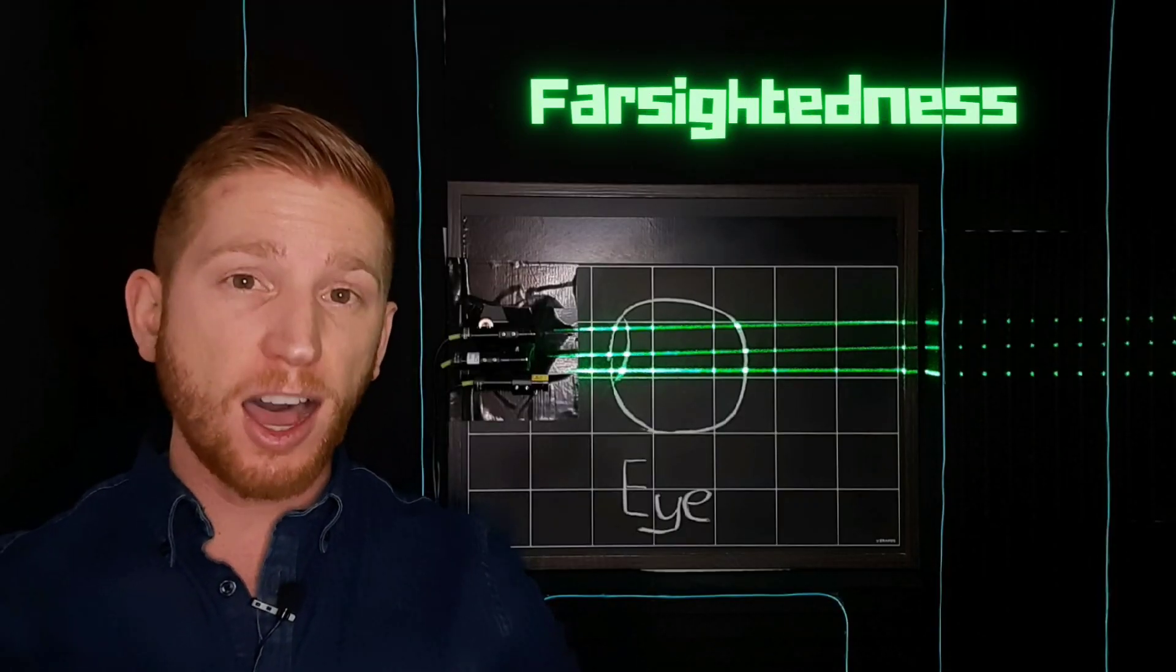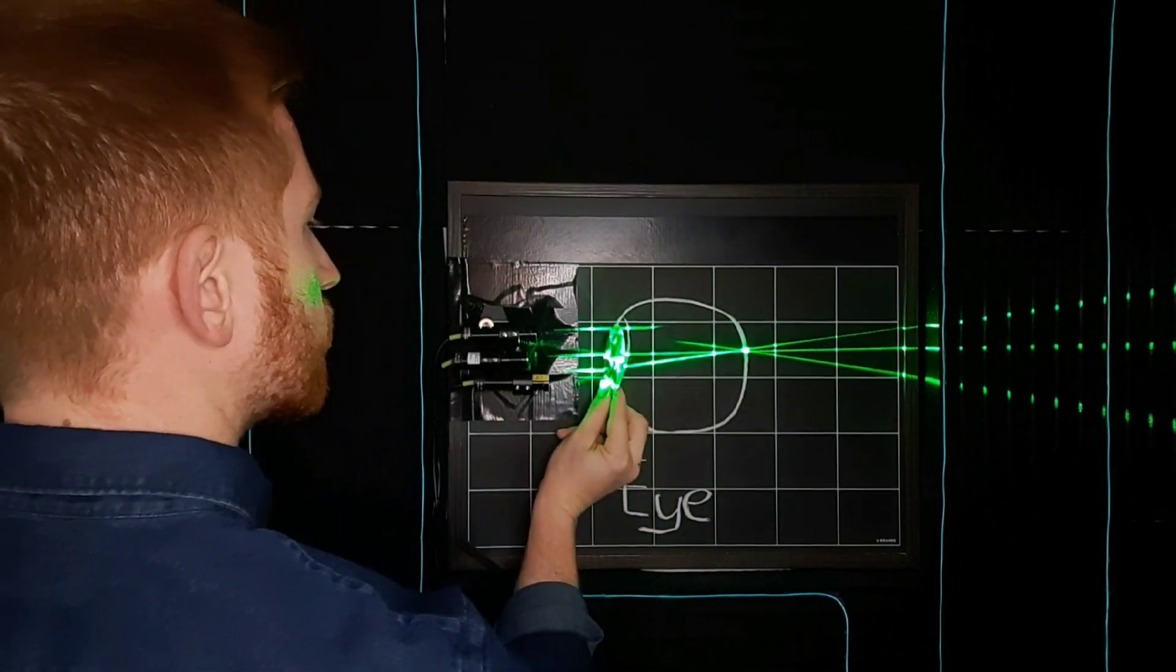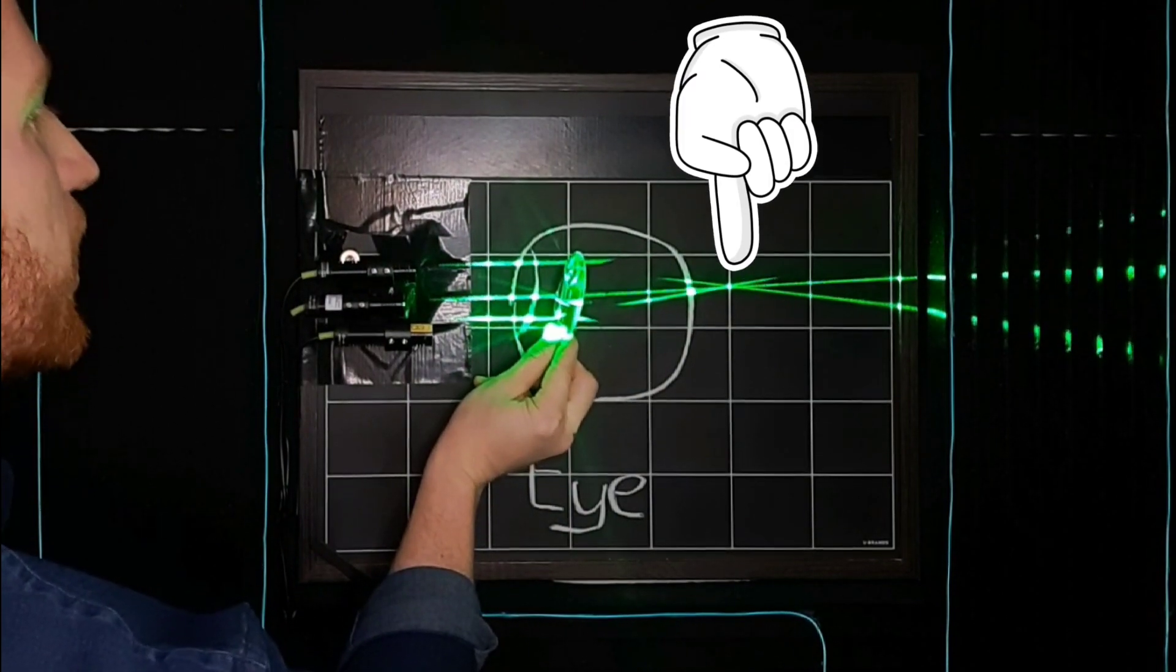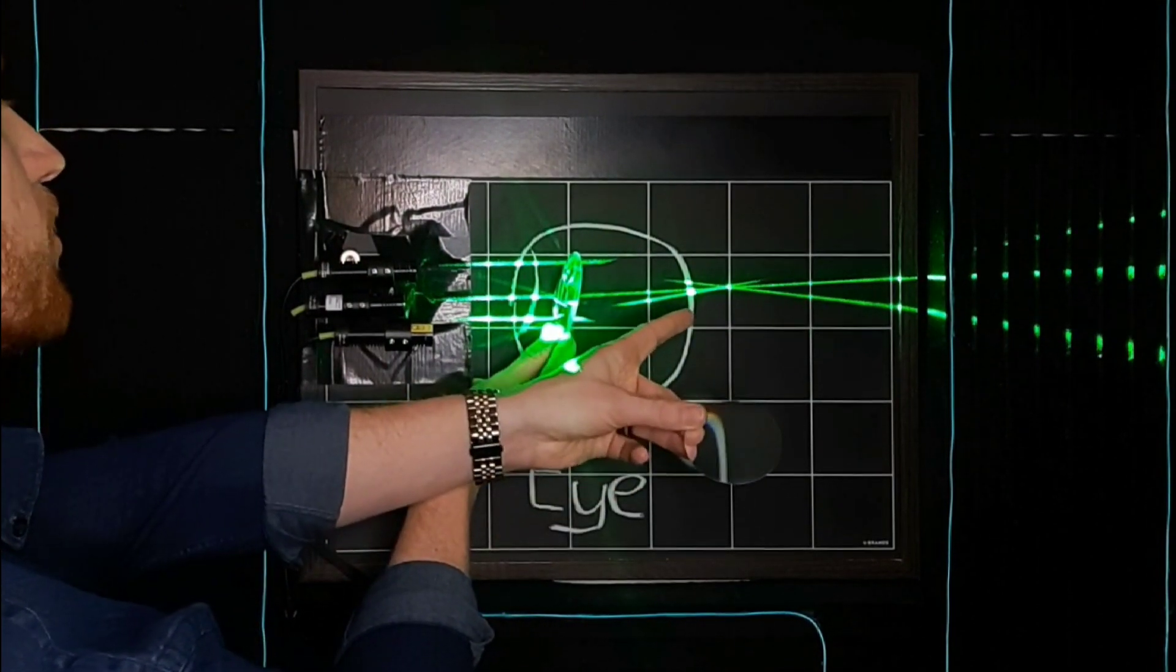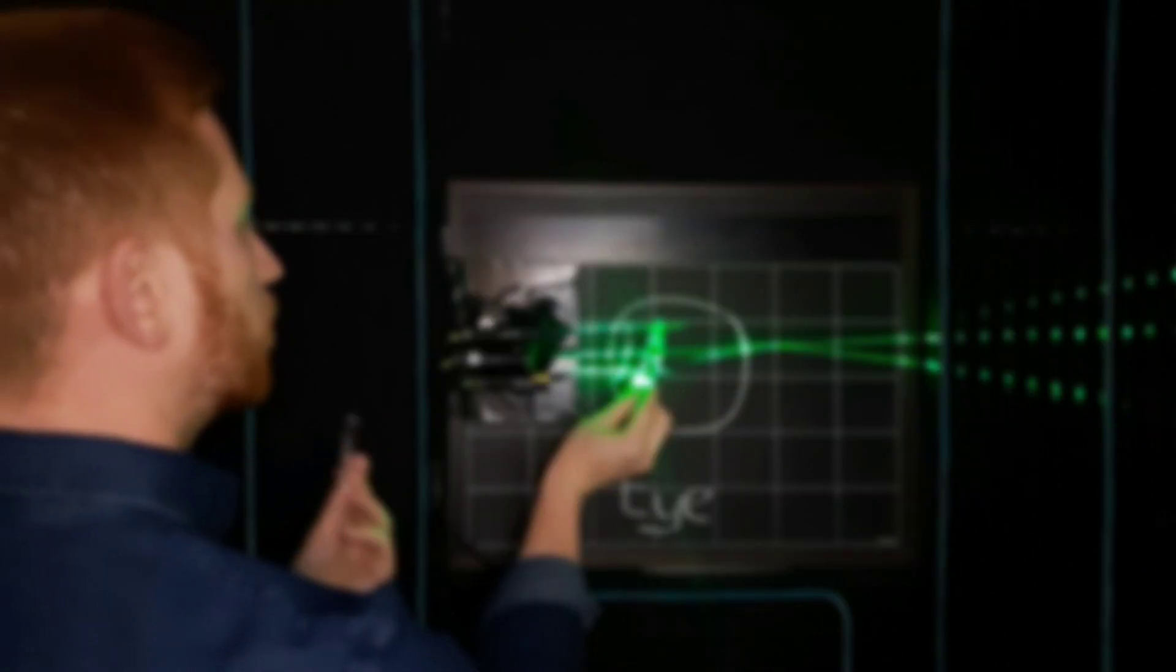Being farsighted is the opposite of that, where instead of focusing light too soon, farsighted eyes don't bend the light strongly enough. So it hasn't quite come to a point of focus before it reaches the retina, so again things become blurry.